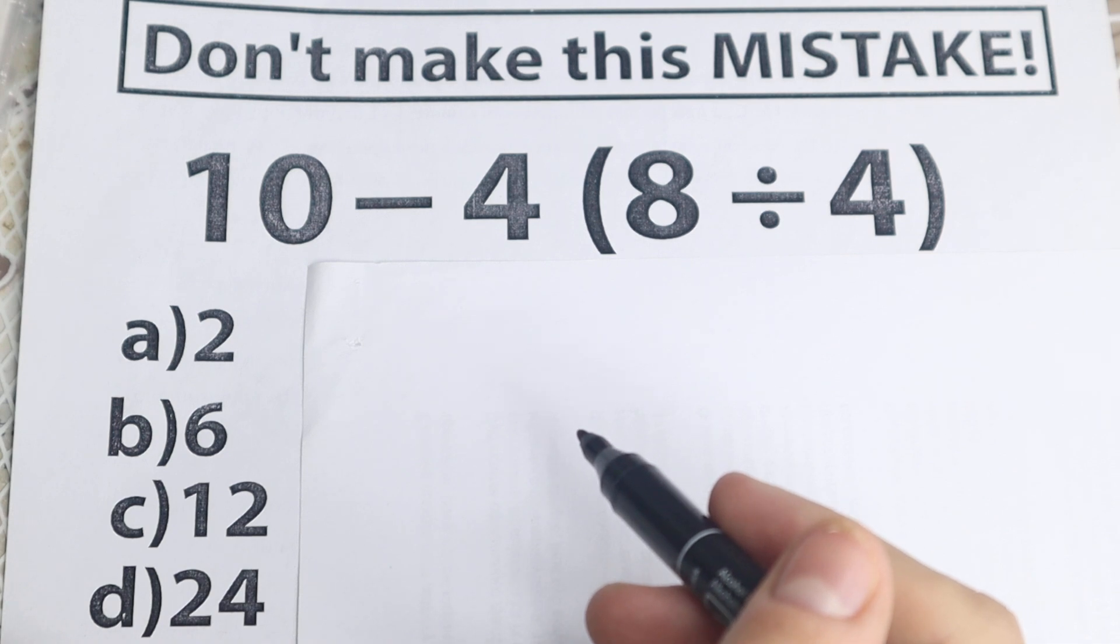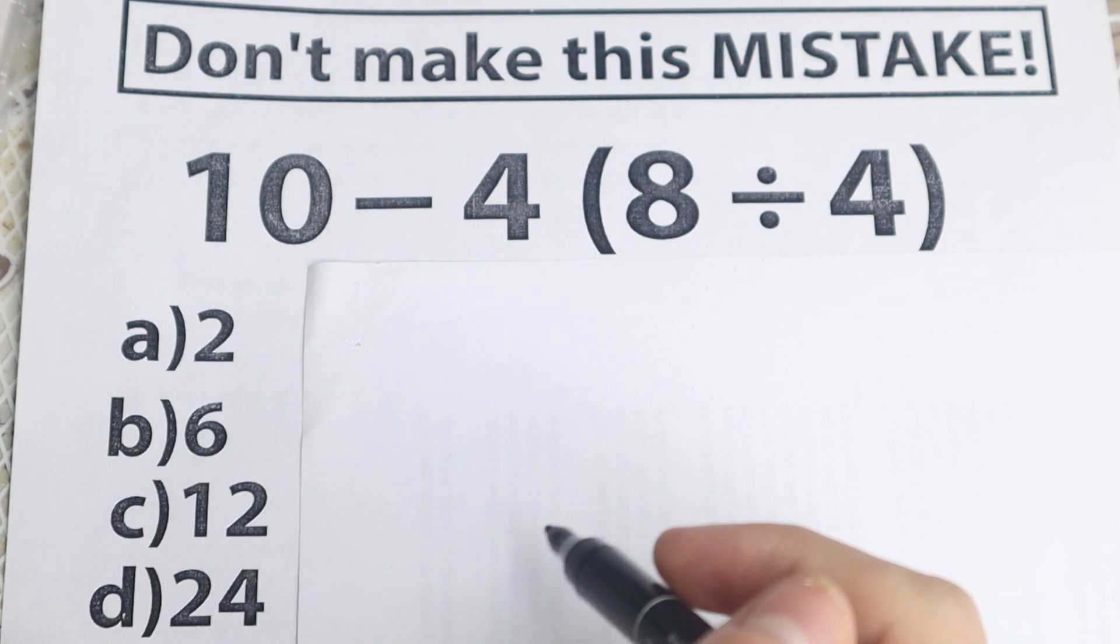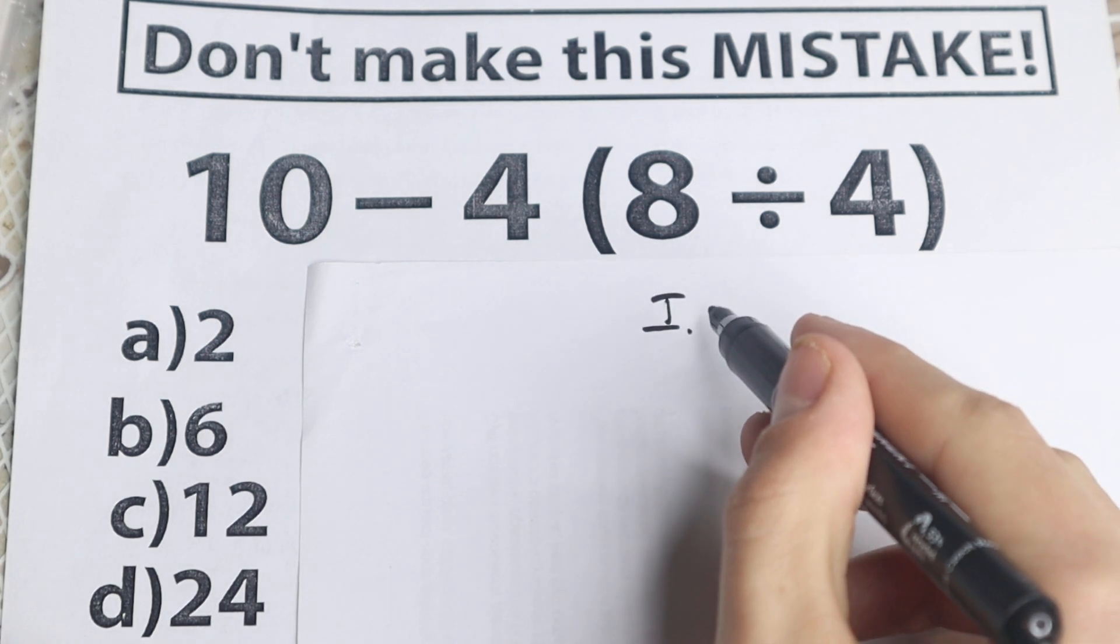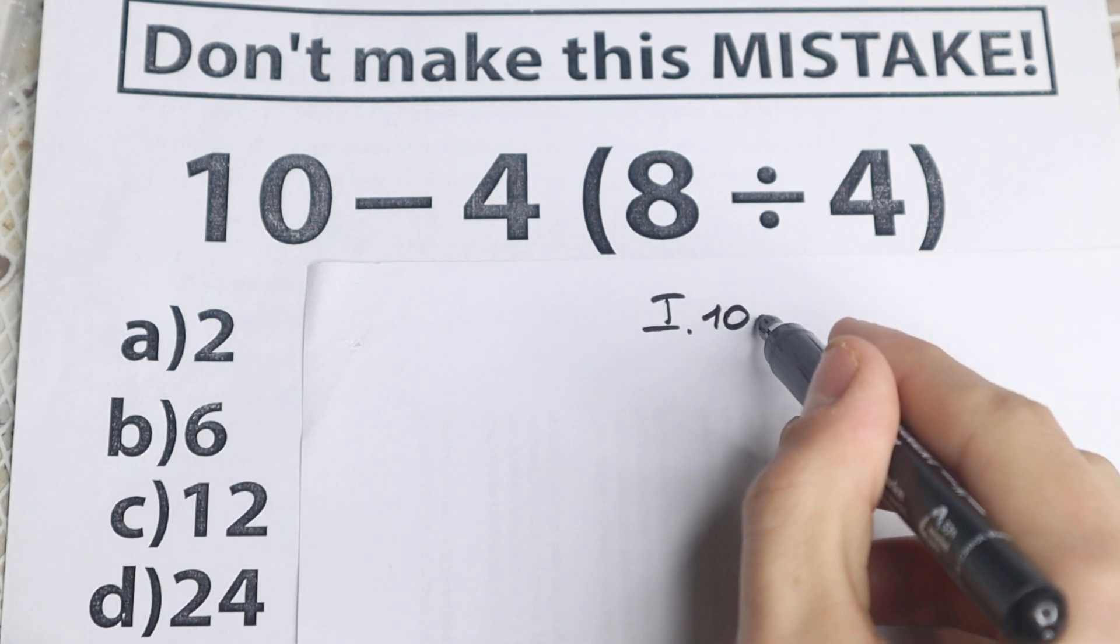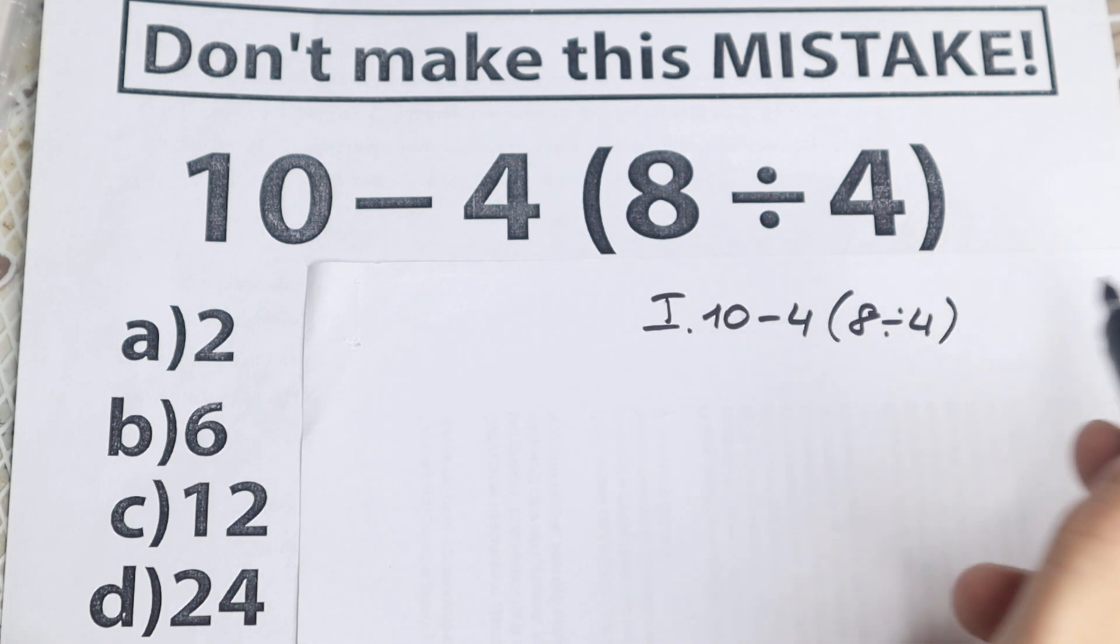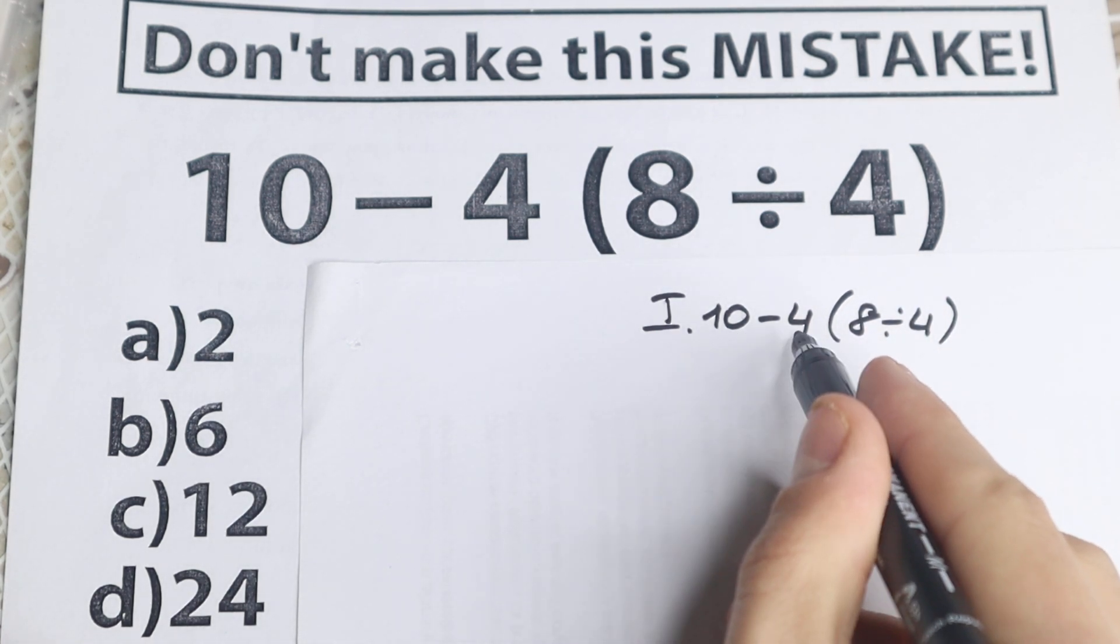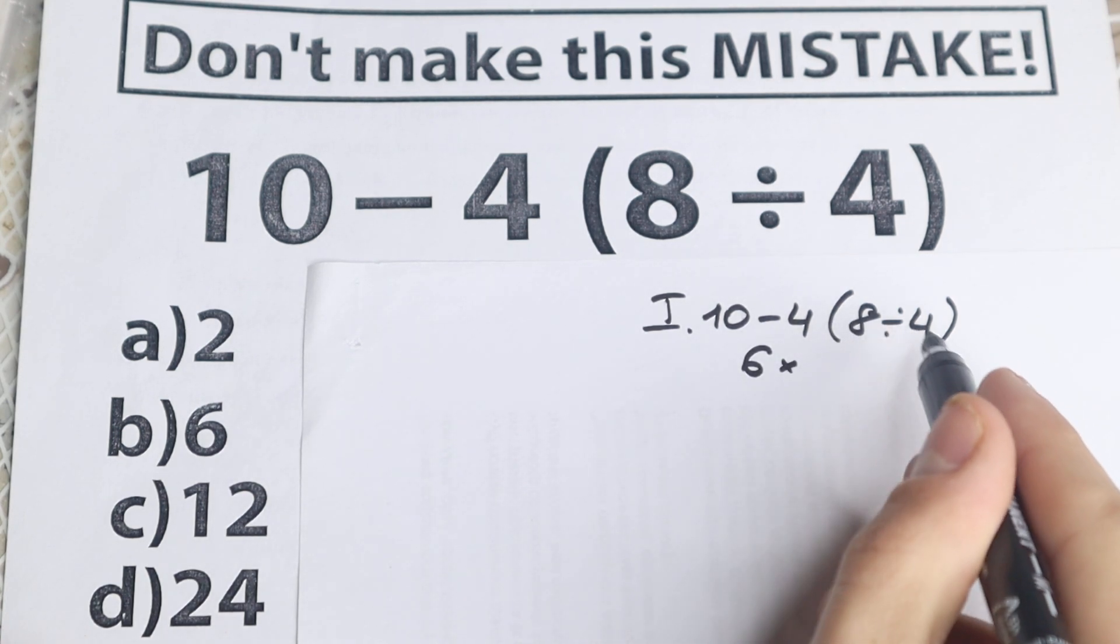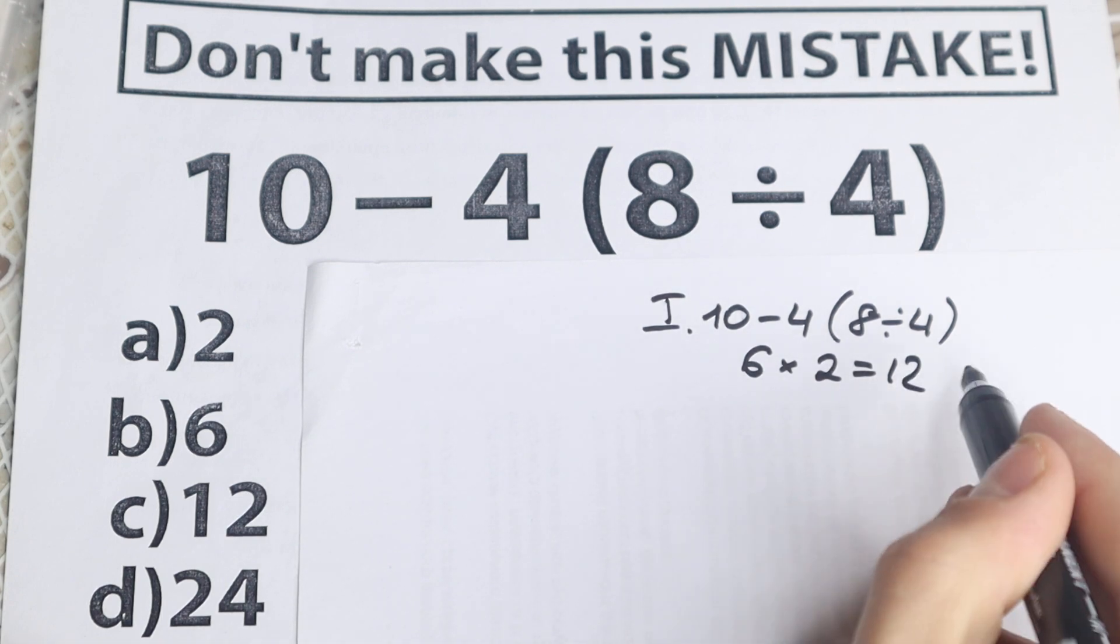And right now we are going to solve it. Take a look closely. One part of students solve it like that. So 10 minus 4, I just rewrite this problem, so 10 minus 4 and in parentheses 8 divided by 4. One part of students solve it like that: 10 minus 4 equals 6, and right here times 8 divided by 4 equals 2, so it looks like 12.